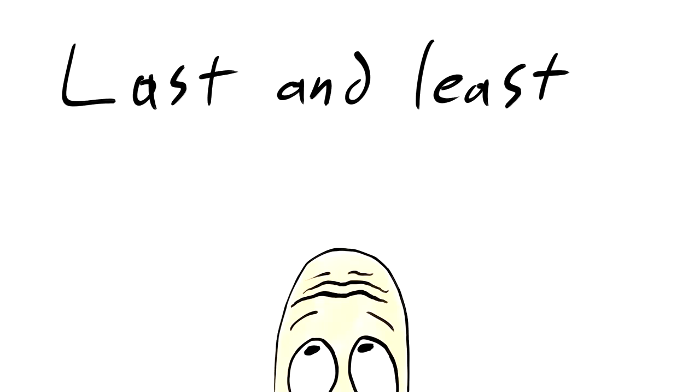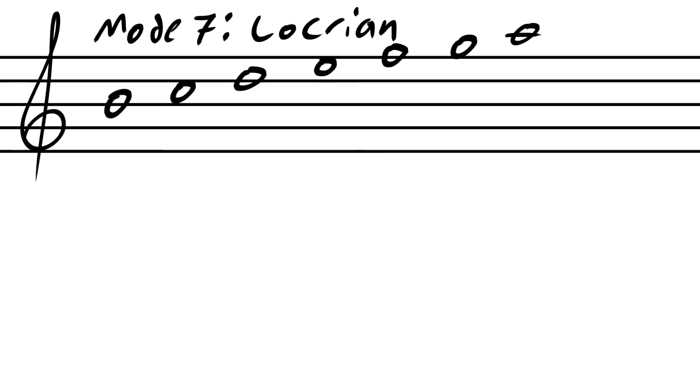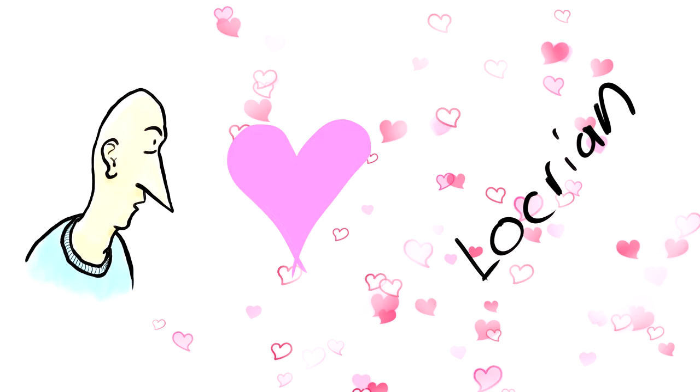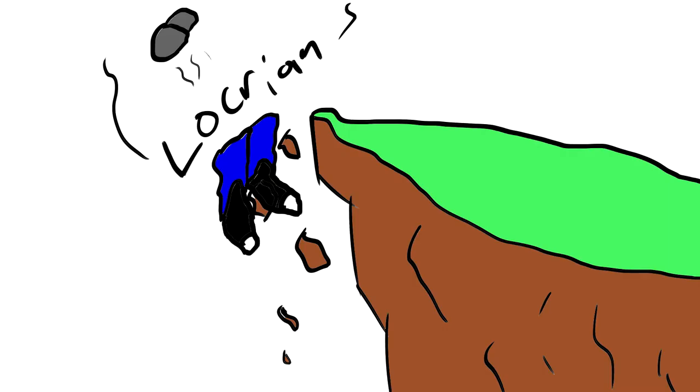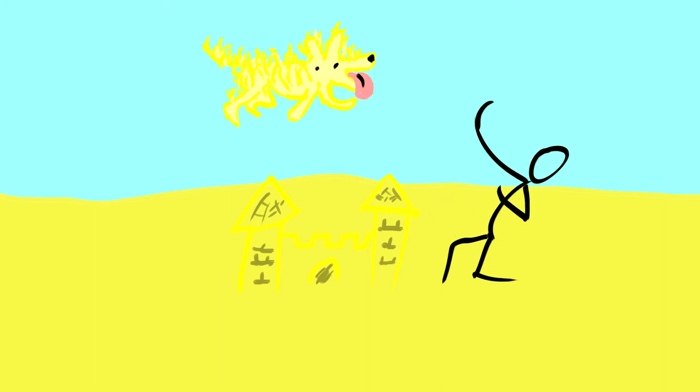Last and least is mode seven, Locrian. Poor Locrian. Only progressive musicians, metalheads, and weirdo composers like me use you. And unfortunately for good reason. There's no stability in it. Writing a piece in Locrian is like building a sandcastle with a golden retriever. It's very challenging.